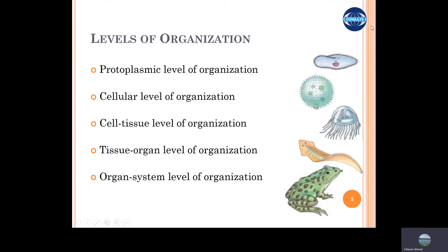Starting with the simplest form, we have the example of paramecium. Here, the animal is single-cellular, with organelles performing proper functions for survival. The animal cell does not interact with other cells to the extent of being dependent on them. This is called the protoplasmic level of organization — each cell is an independent living organism responsible for its own food, protection, and reproduction, with no dependence on other organisms.